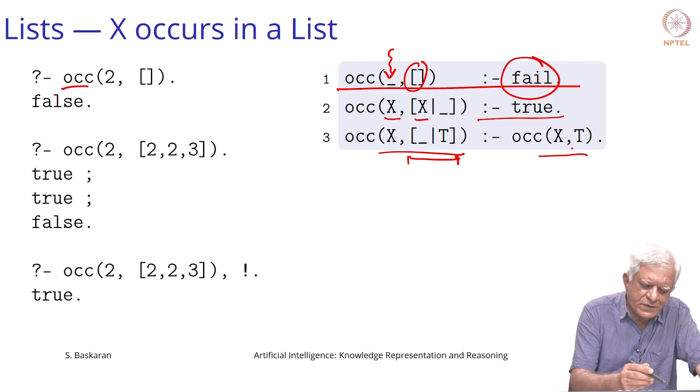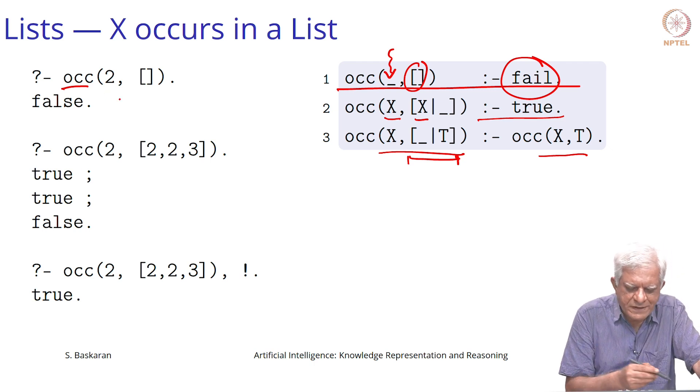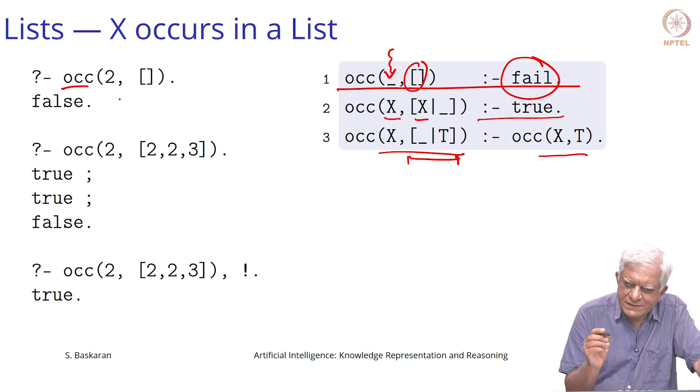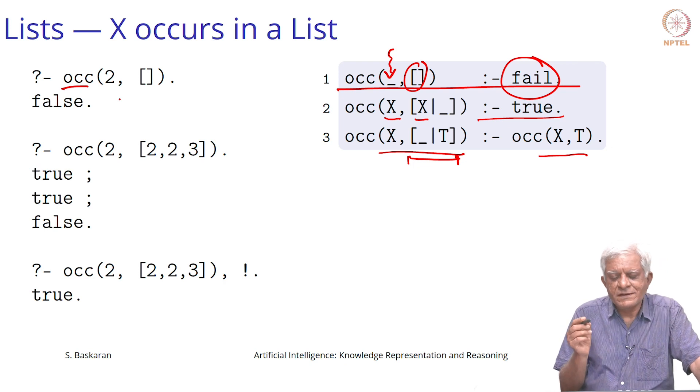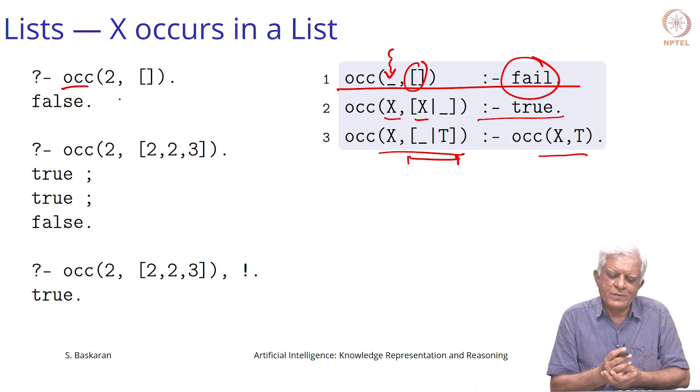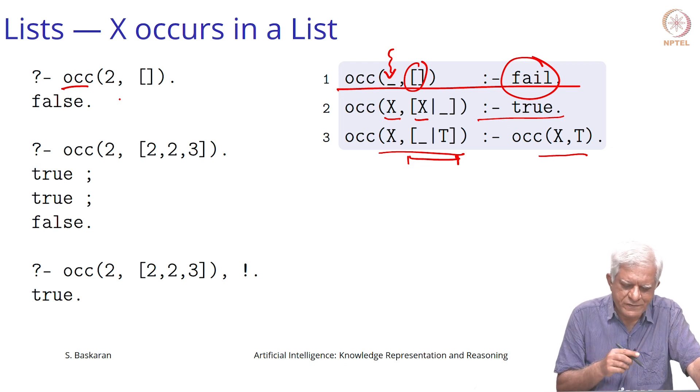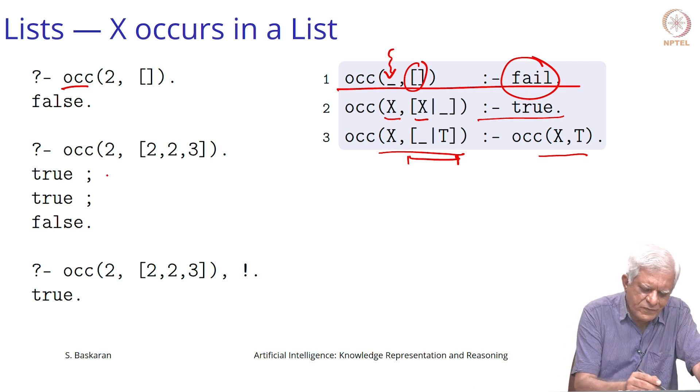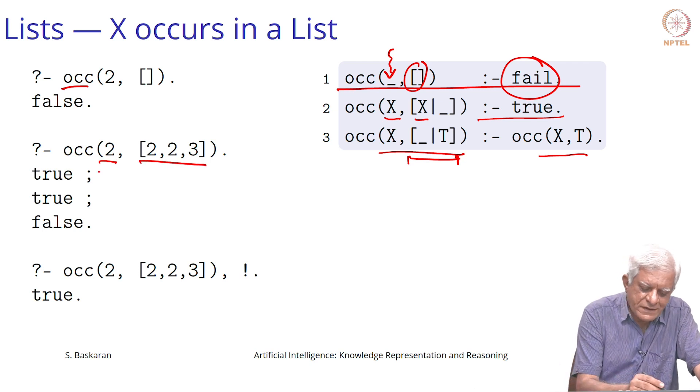If you run this program with these queries, the first query will return false because in the empty list there can be nothing. You must think about this that even if you did not write the first clause, it will still return false because of the fact that Prolog has this idea of negation which says that I was not able to show that 2 belongs to this list, and therefore it must be false, which is called negation by failure.